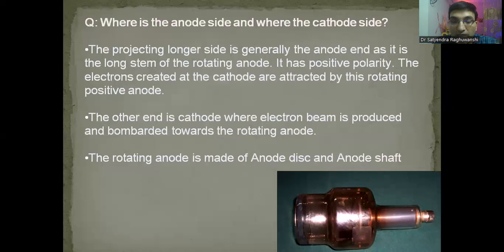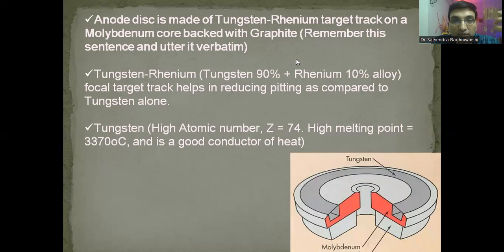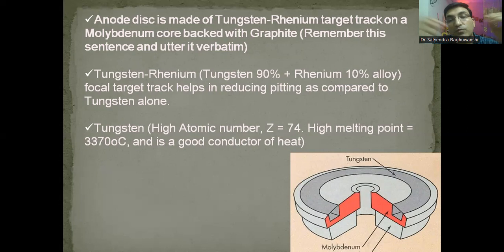The rotating anode has two parts: the anode disc and the anode shaft. The target track or anode disc is made of tungsten-rhenium alloy with a molybdenum core backed with graphite. It is tungsten-rhenium alloy: 90% tungsten plus 10% rhenium. Why this alloy? To reduce pitting, since tungsten alone causes a lot of pitting. Tungsten has a very high atomic number and hence a very high melting point — 3370 degrees Celsius as mentioned in Christensen's. The role of molybdenum is to reduce weight and assist heat dissipation. Graphite also reduces weight and helps in heat dissipation.